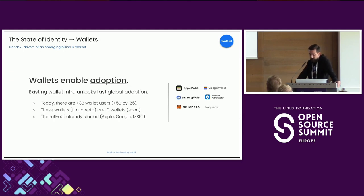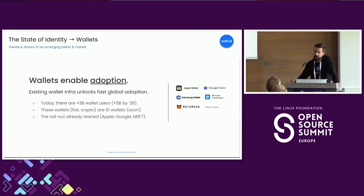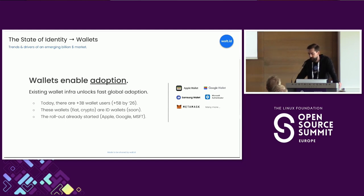Last point: wallets enable adoption. Without wallets, we're lacking the missing link in the trust triangle. One of the things really important to understand about wallets is that we have wallets today — we have wallets for fiat currency like Apple Pay, Google Pay, and Samsung Wallet; we have crypto wallets like MetaMask and others. What we don't yet have broadly adopted are identity wallets. But all of these existing wallets that are already used by people, and all the learned behavior, can really be utilized — we can take a fiat or crypto wallet and just upgrade it to also become an identity wallet.